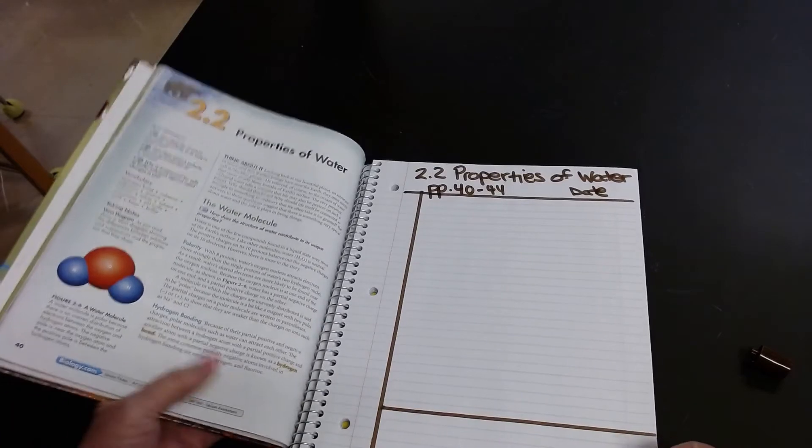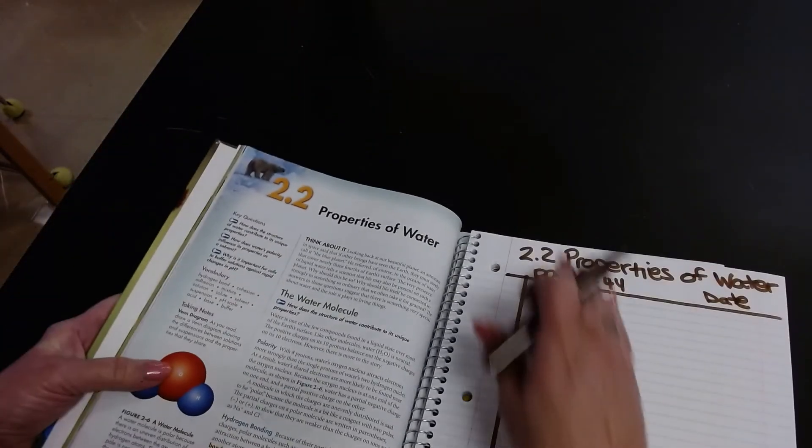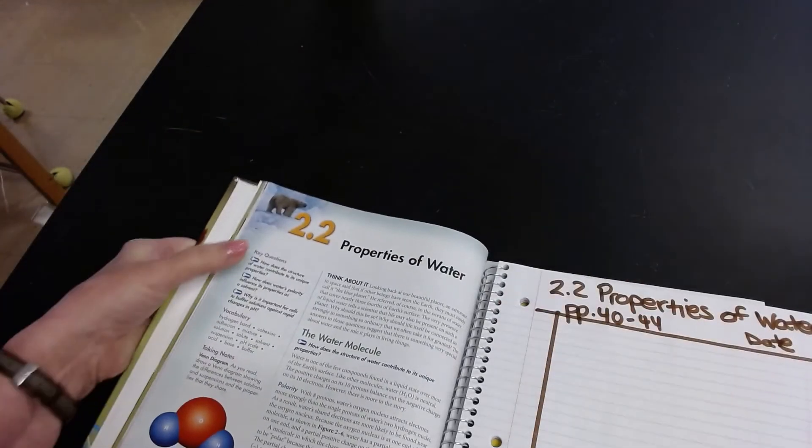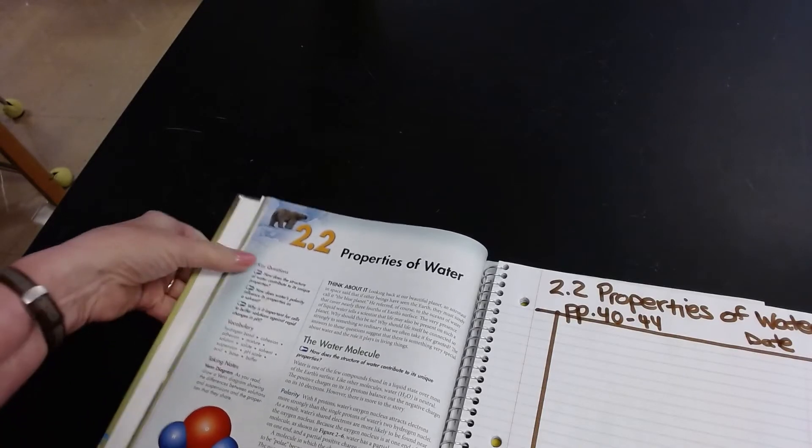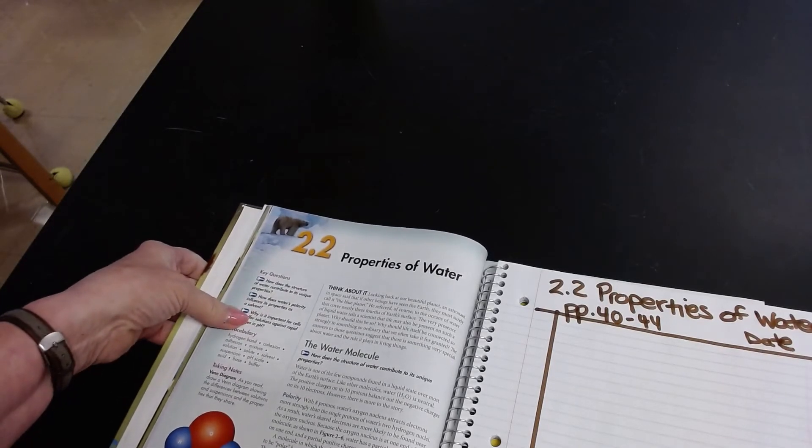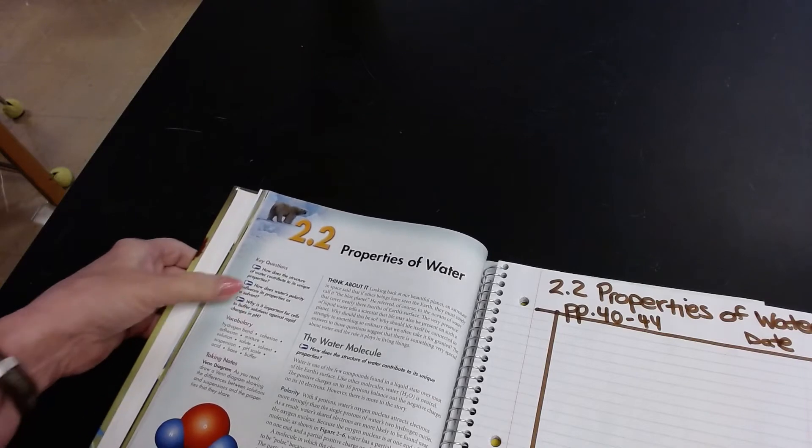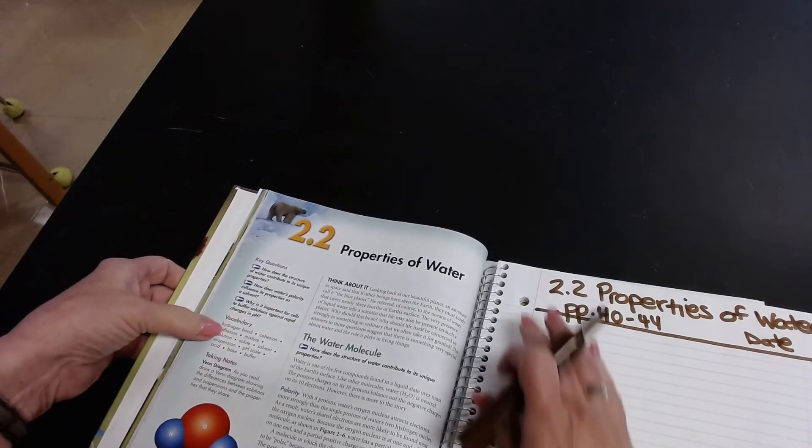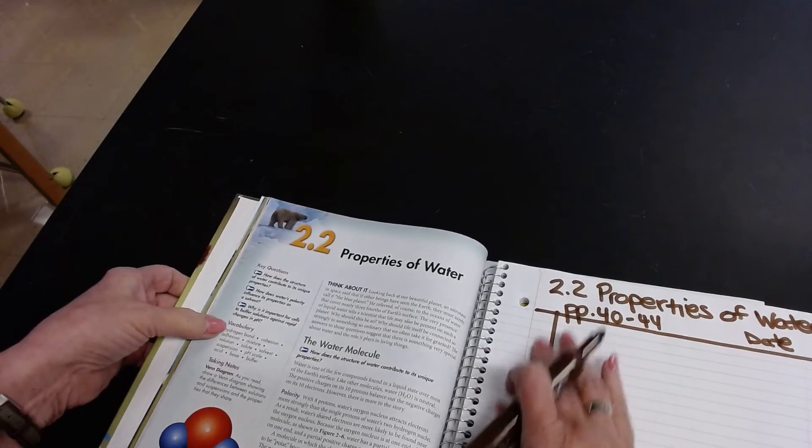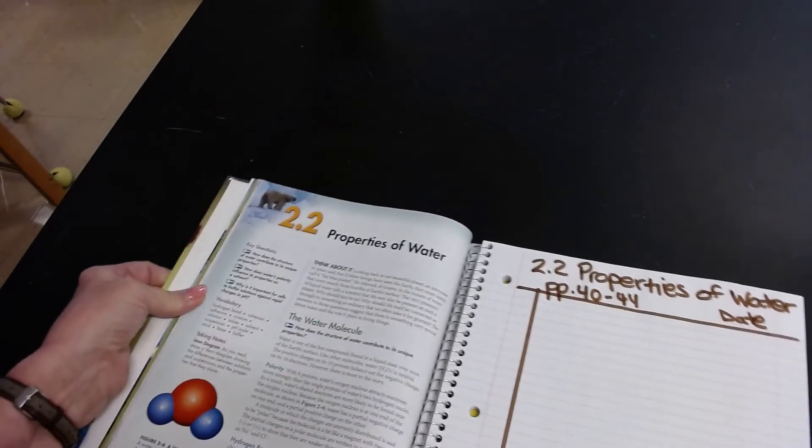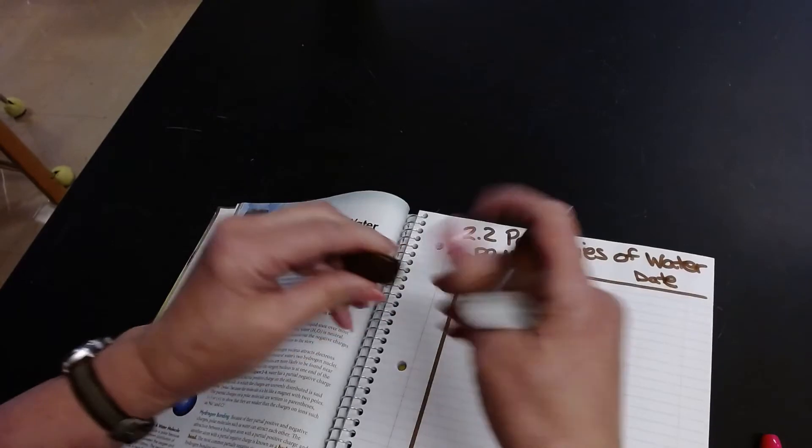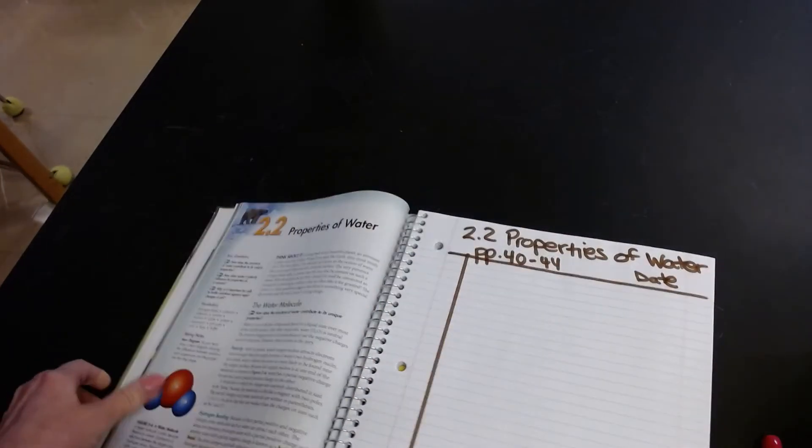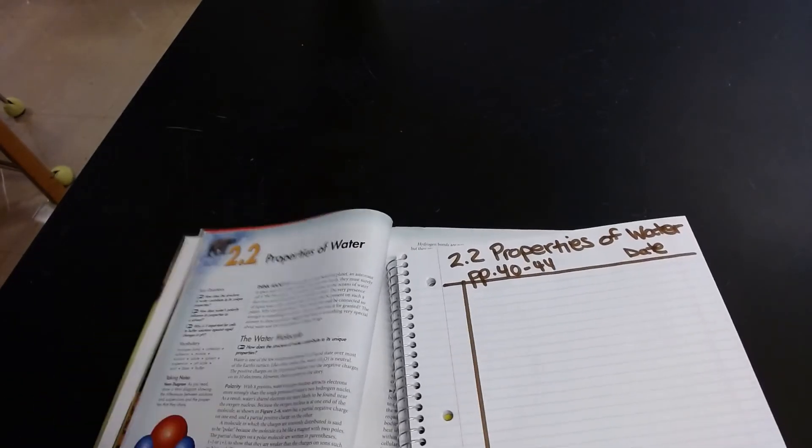Then one thing that you might want to know that's interesting about the Miller book is in the Miller book there are key questions over here. Those are the key ideas that you need to know for your chapter test. And right below that is vocabulary words. So before I said we put key questions and key ideas down here. And that's exactly what I'm going to do. So I'm going to put my marker away. And I'm going to show you with a pencil, with an ink, what I'm going to do.